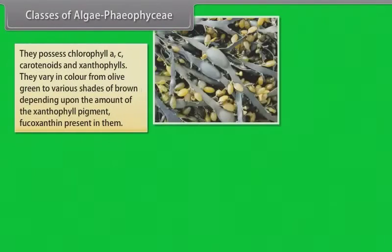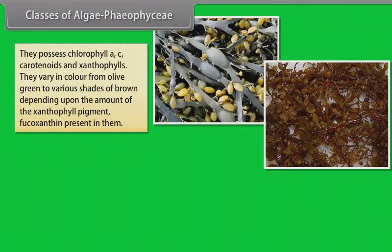They possess chlorophyll A, C, carotenoids, and xanthophylls. They vary in color from olive green to various shades of brown depending upon the amount of xanthophyll pigment fucoxanthin present in them.